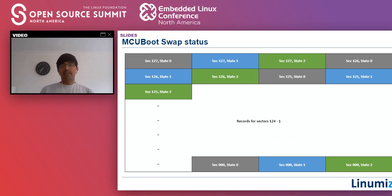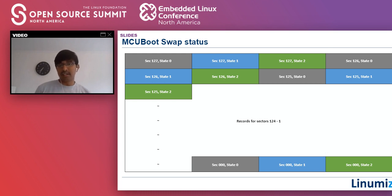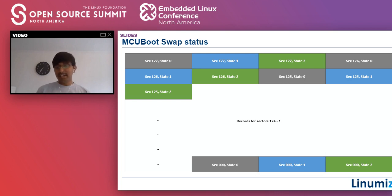If power fails mid-swap, MCU Boot boots again, detects the state by reading the trailer, and resumes from exactly where it left off. This ensures the device is not bricked. MCU Boot keeps a three-state record for each sector copied — tracking whether each sector transfer from slot 1 to scratch to slot 0 is complete — so it knows whether the swap is complete, partial and needs resuming, or needs to boot the first image.